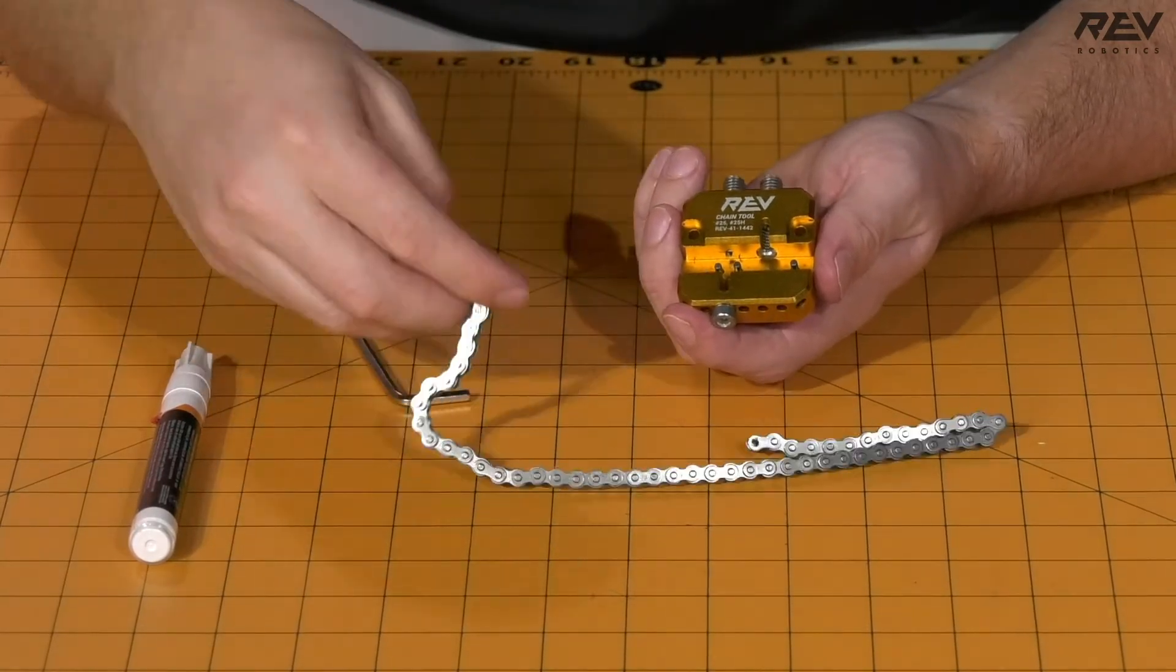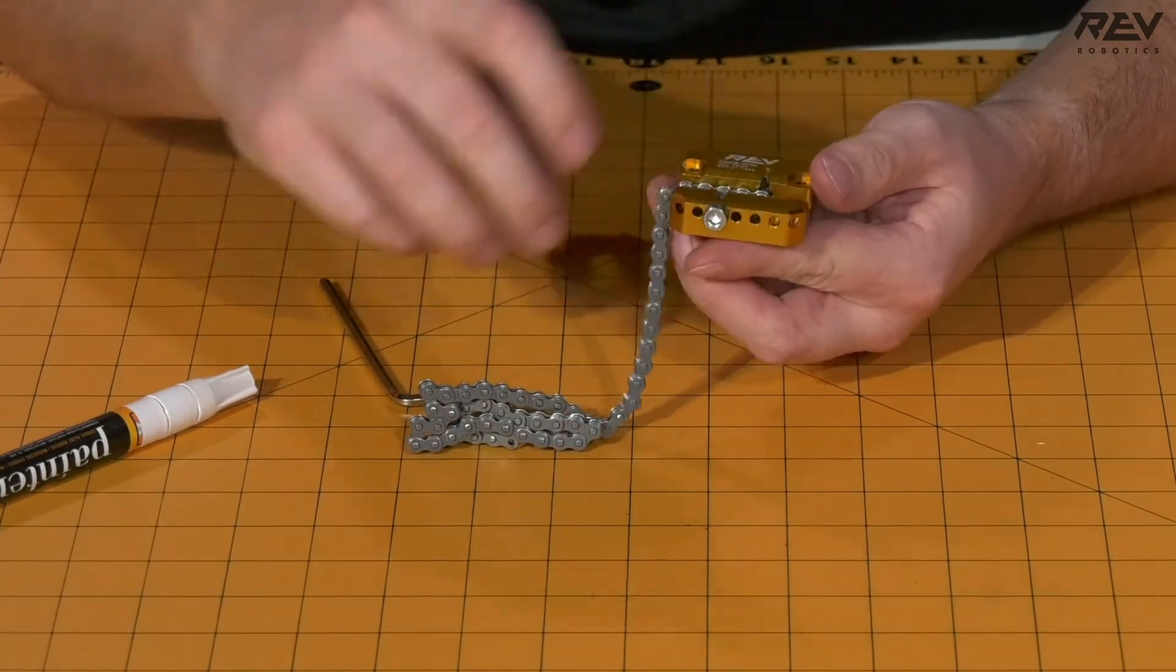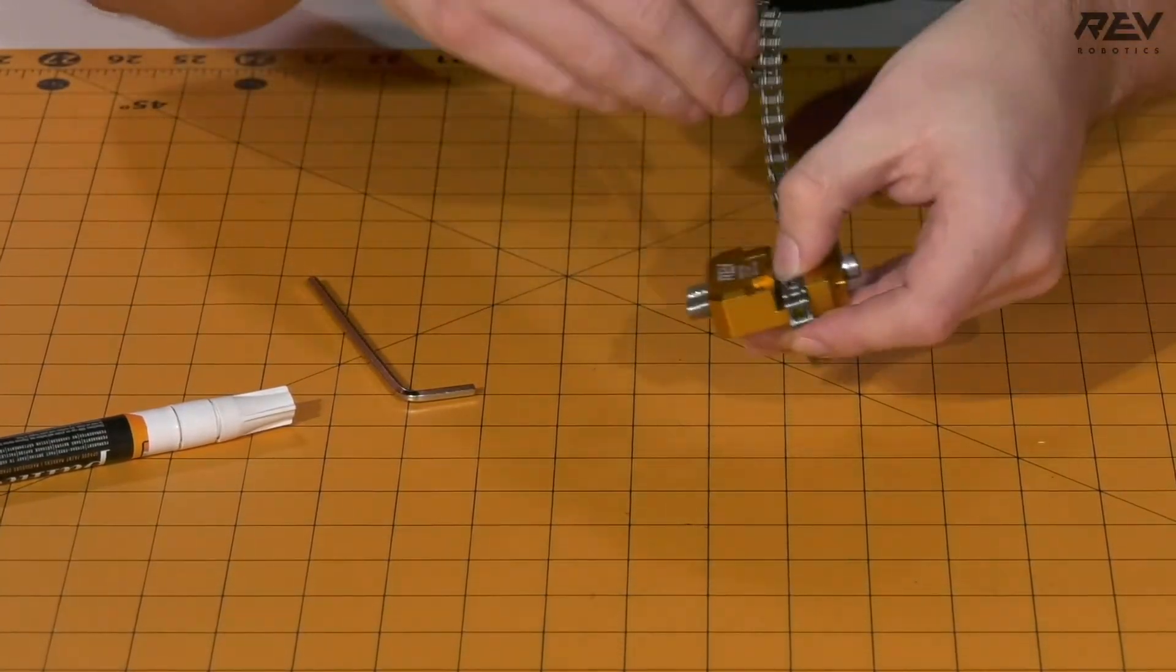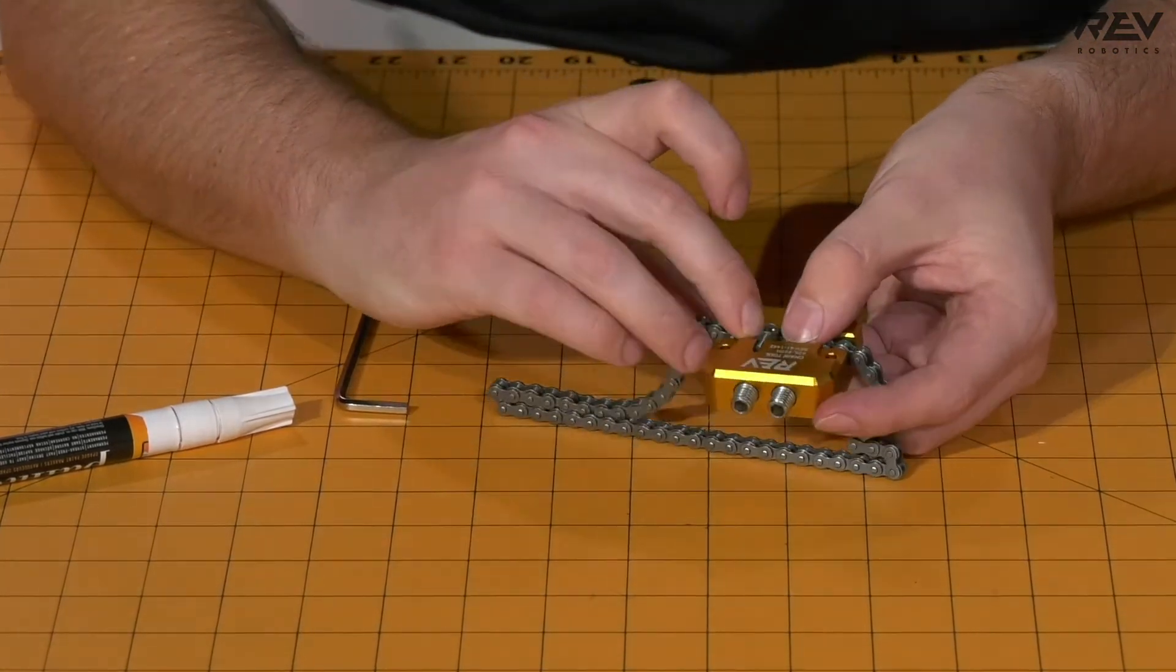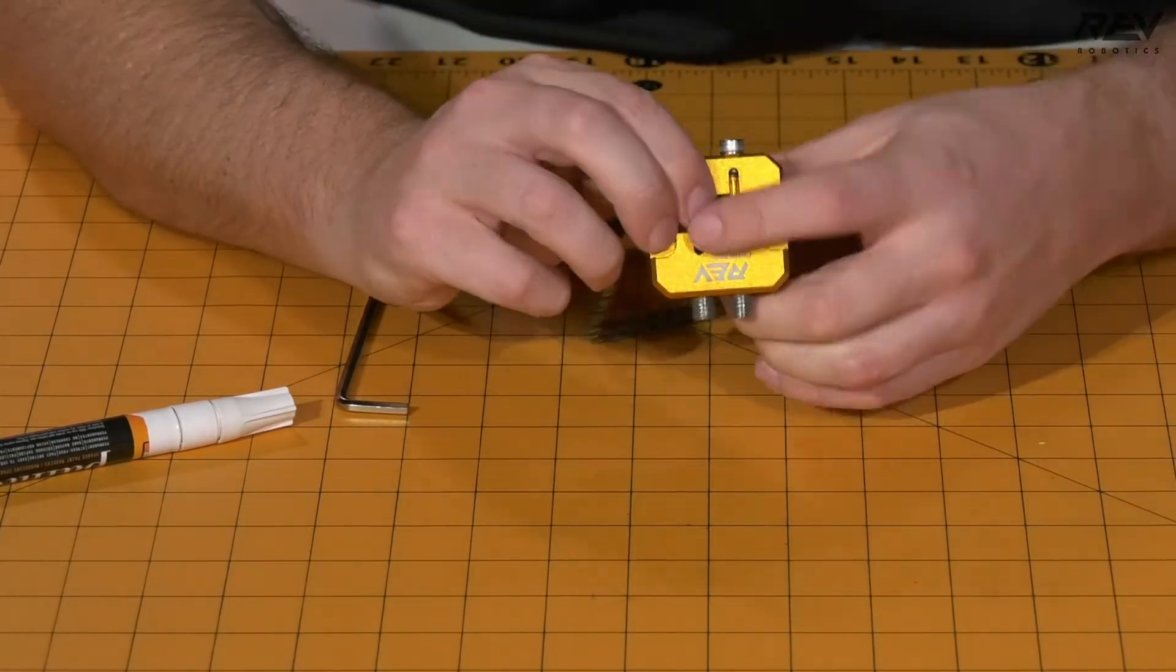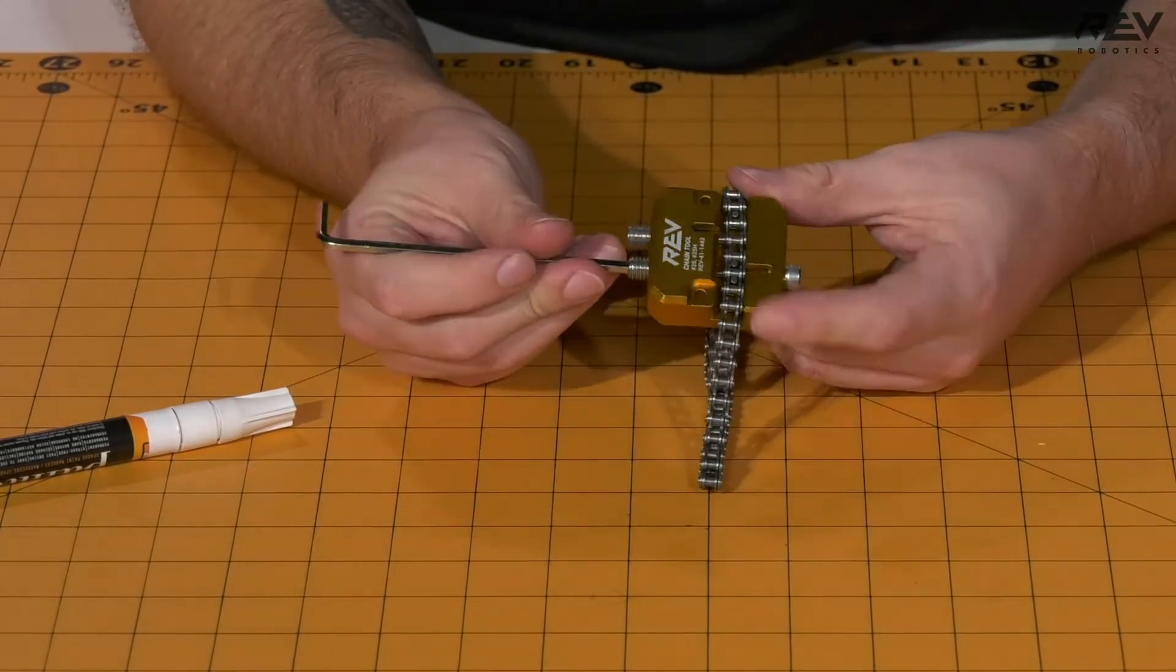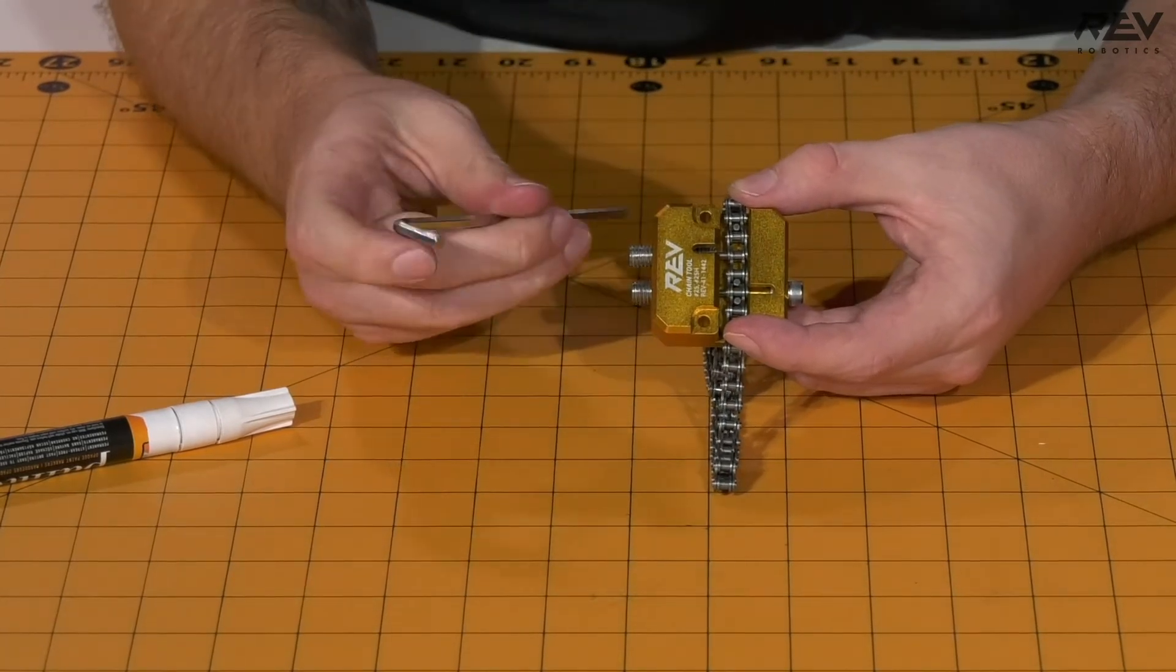We're going to start by taking the end that does not have the pin and aligning that through these two pins that are built into the chain tool to hold it in place. Then you're going to take the rest of your chain and wrap that around to then place these inside of each other. Once those are set, I tend to like to take the pin set screw and just tighten that down just a little bit, not a ton, just enough for it to be able to make some contact to help hold the chain in place.